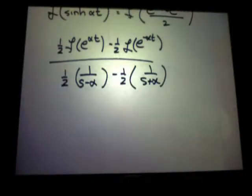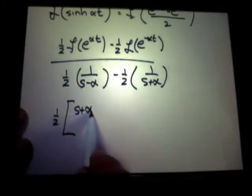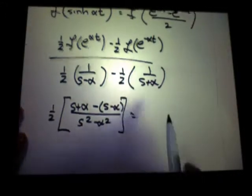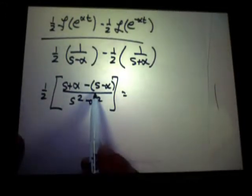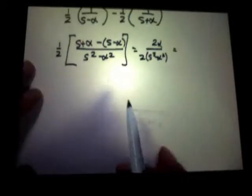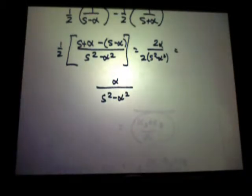This is the non-integration way of getting the transform, and of course the caution is that o plus sign. So what do you get here? One half times s plus alpha minus s minus alpha over s squared minus alpha squared, right? So I think this would be 2 alpha over 2 times s squared minus alpha squared, or alpha over s squared minus alpha squared, which happens to be correct.